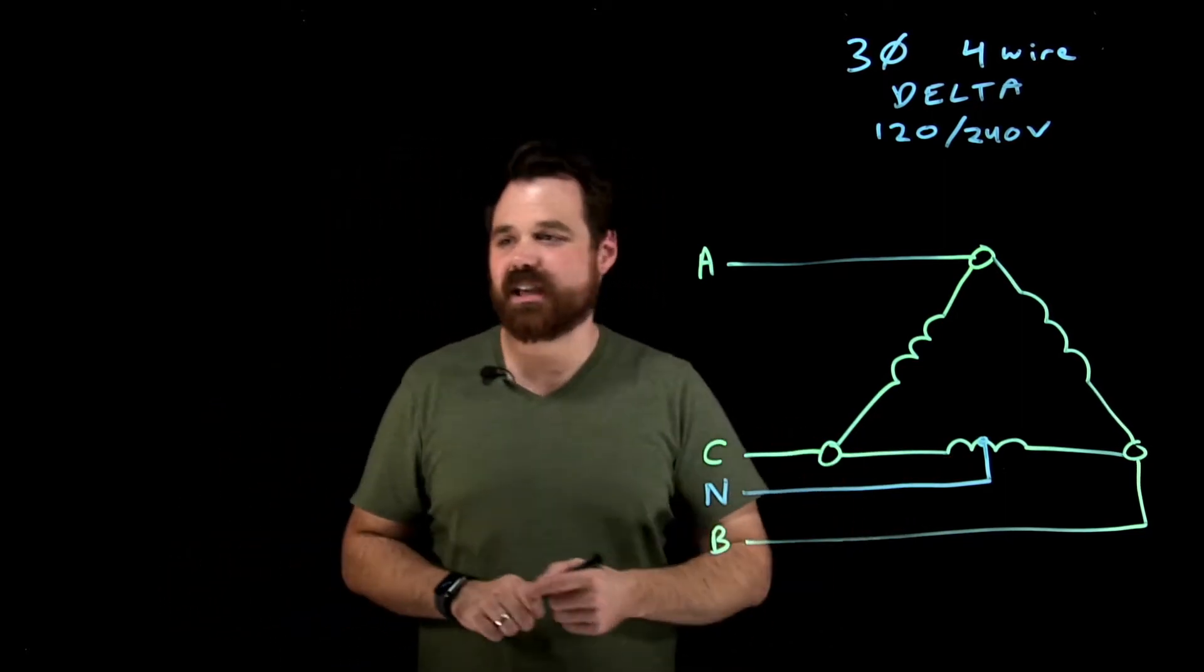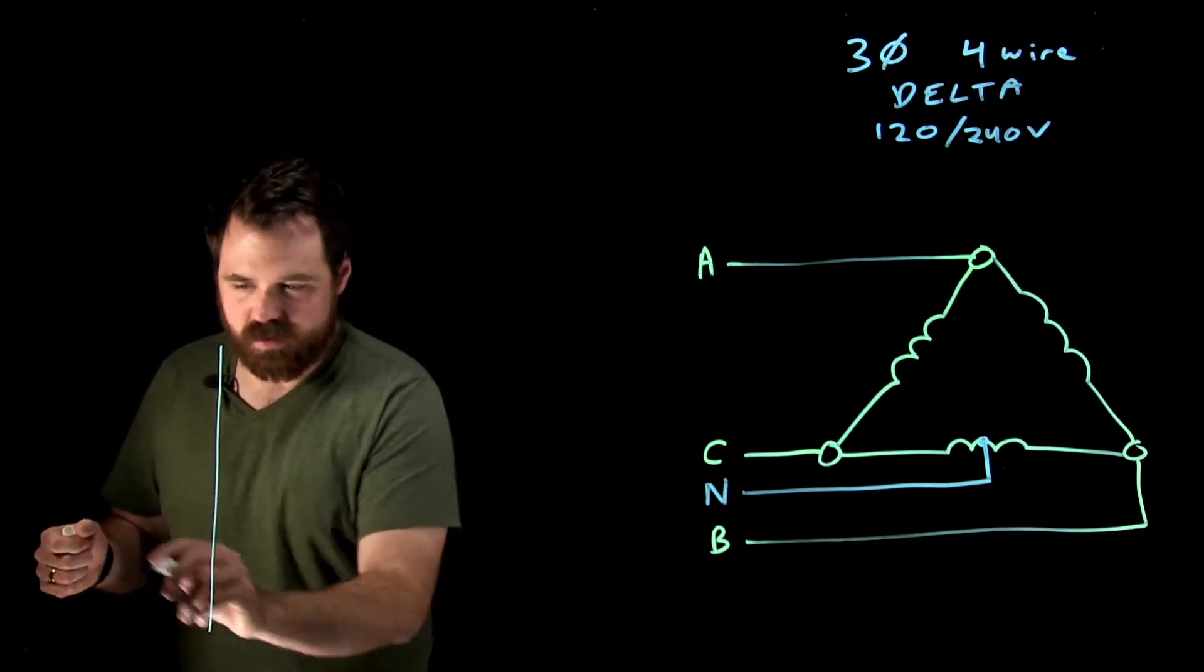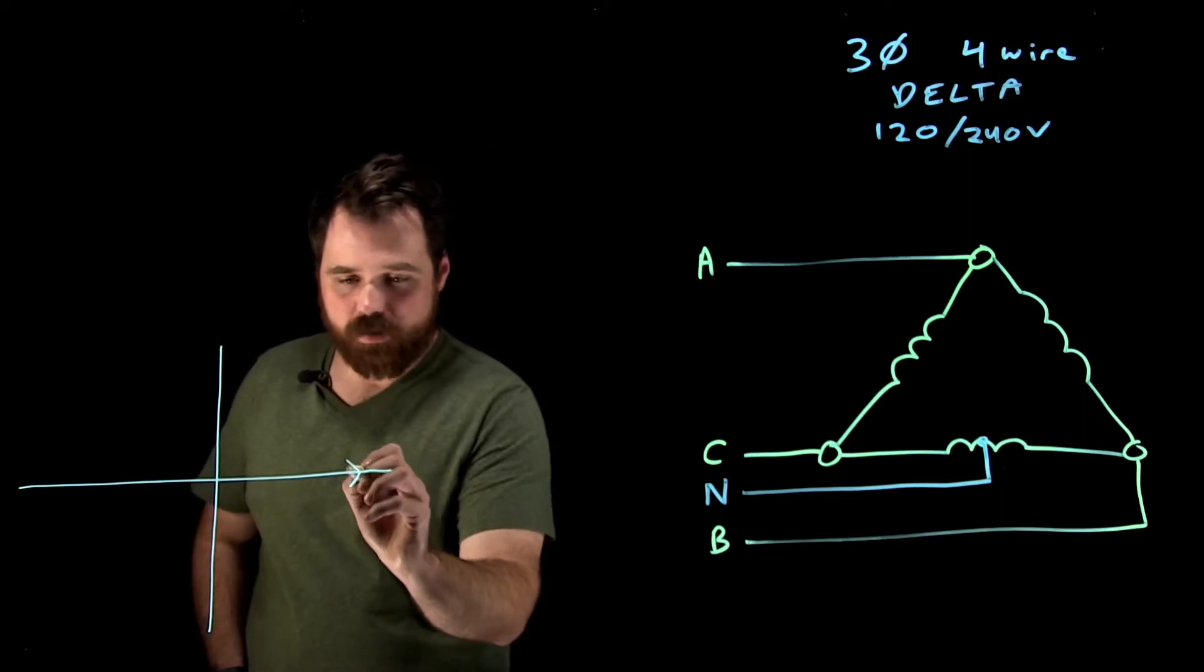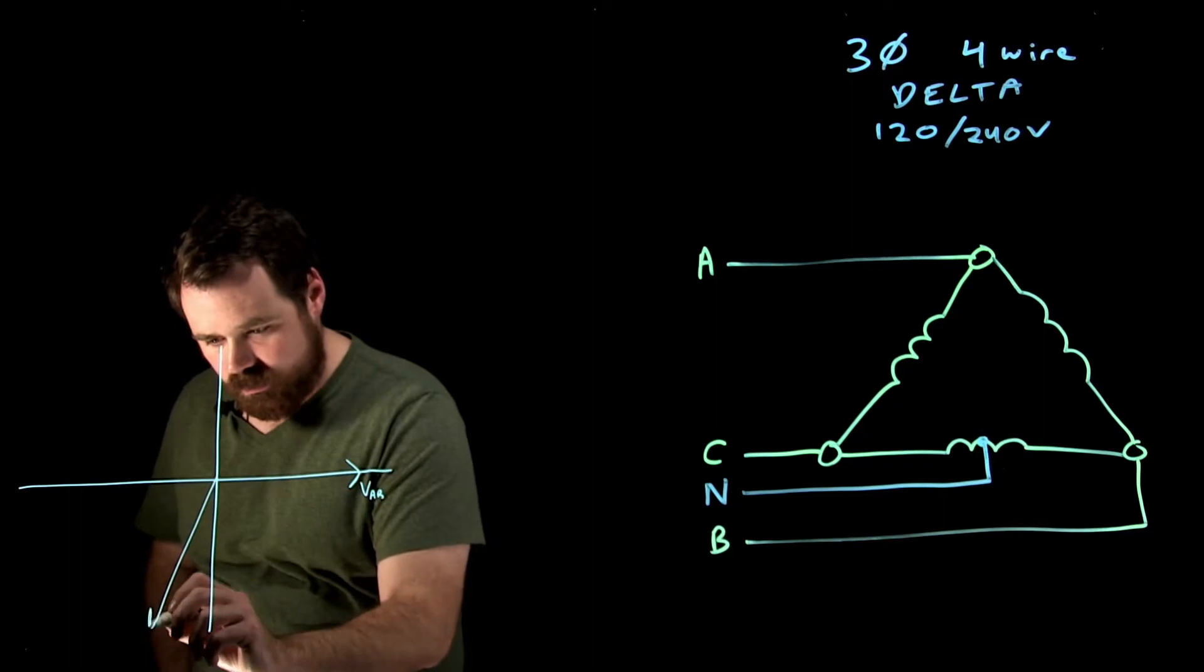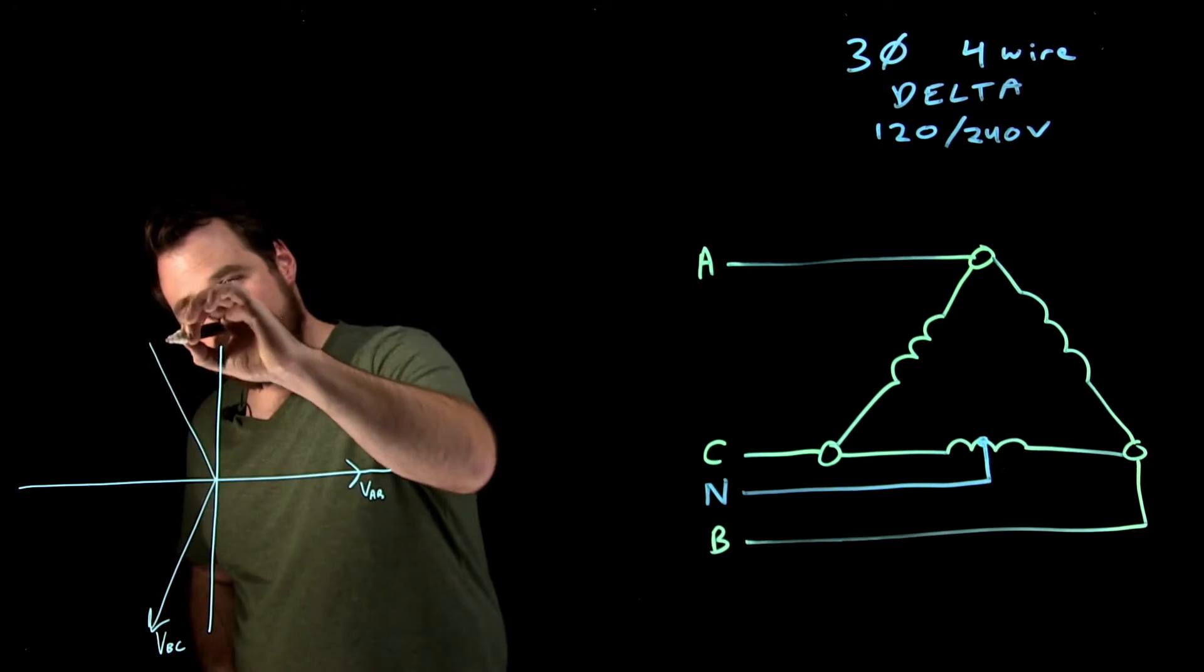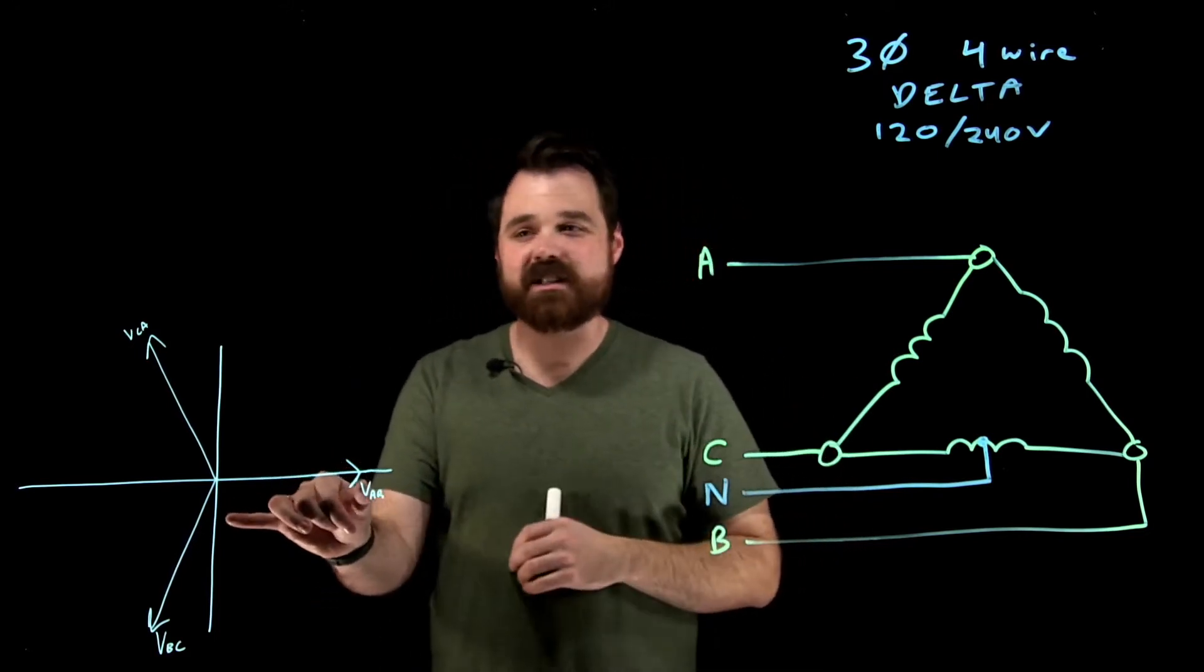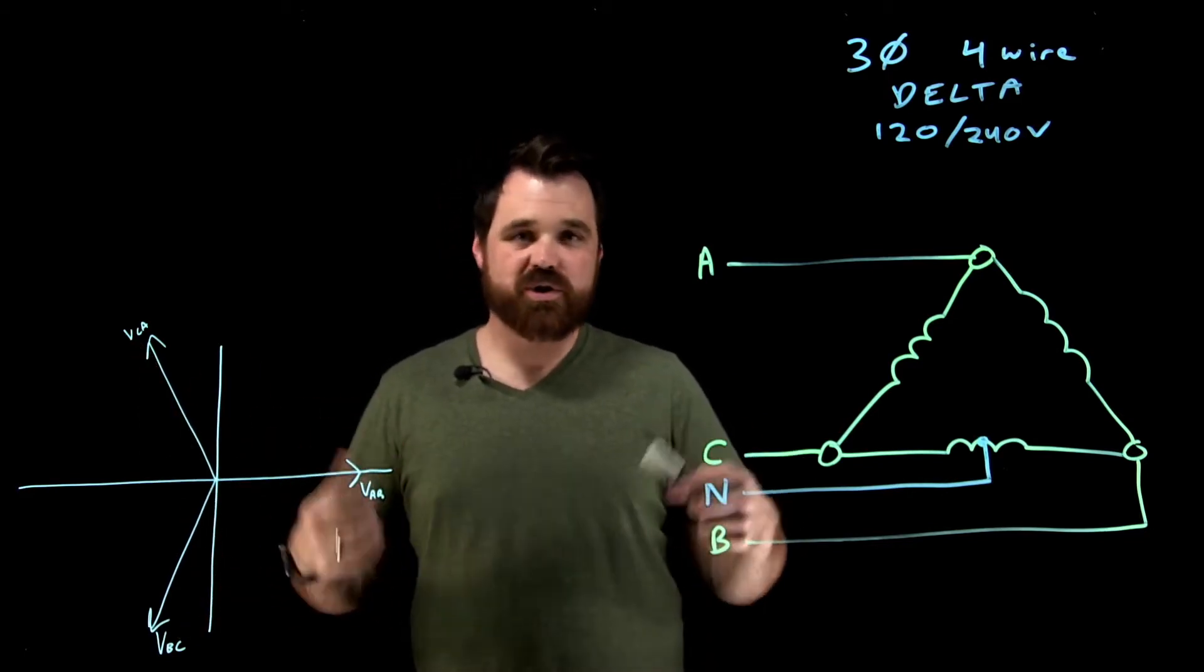So what we start to see is something that actually looks kind of like this. I'm going to do a little phasor diagram over here. We have our standard three-phase delta voltages. We have VAB, VBC, and VCA. And we know, if you've watched my other videos or you know about delta, VAB is at zero, BC is at 240, and CA is at 120.